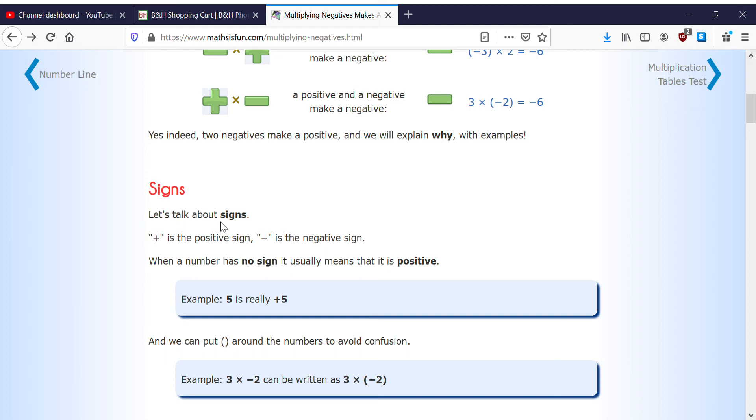Plus is the positive sign, minus is the negative sign. When the number has no sign, it usually means that it is a positive. We can put brackets around the number to avoid confusion. Example: three times negative...